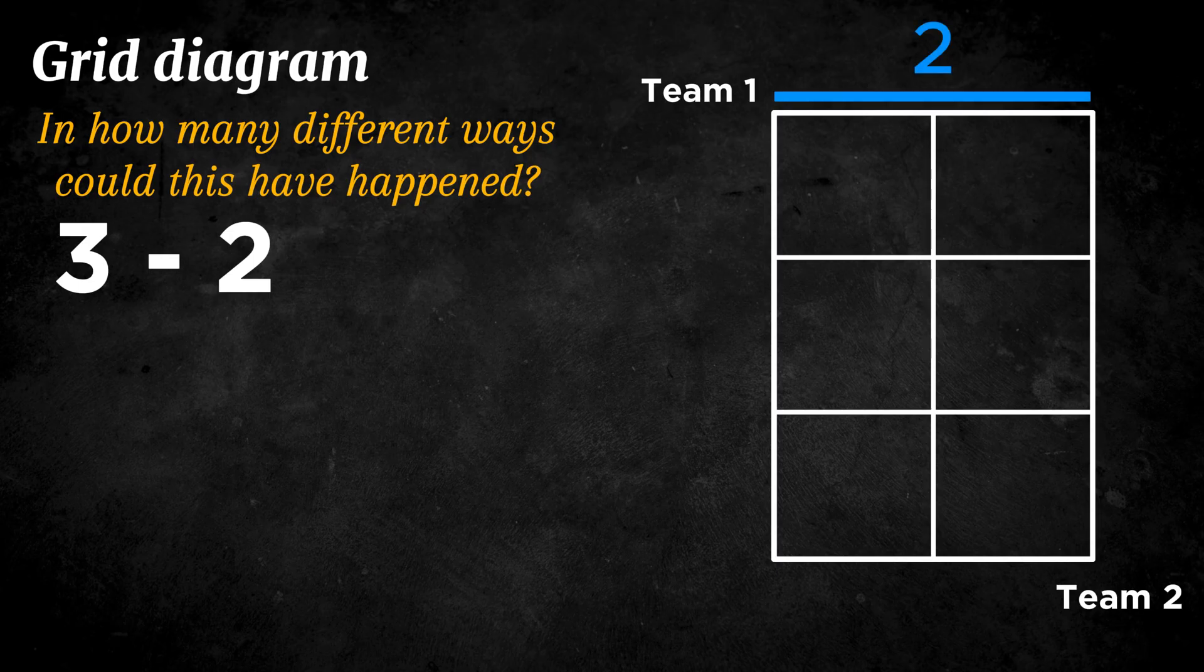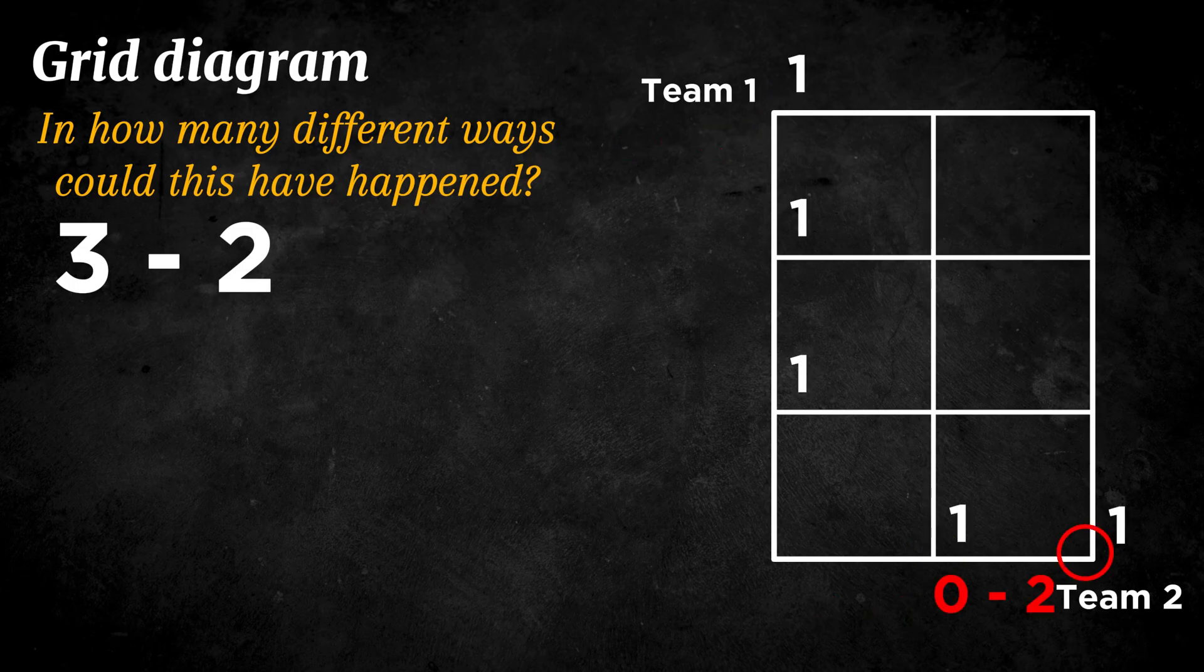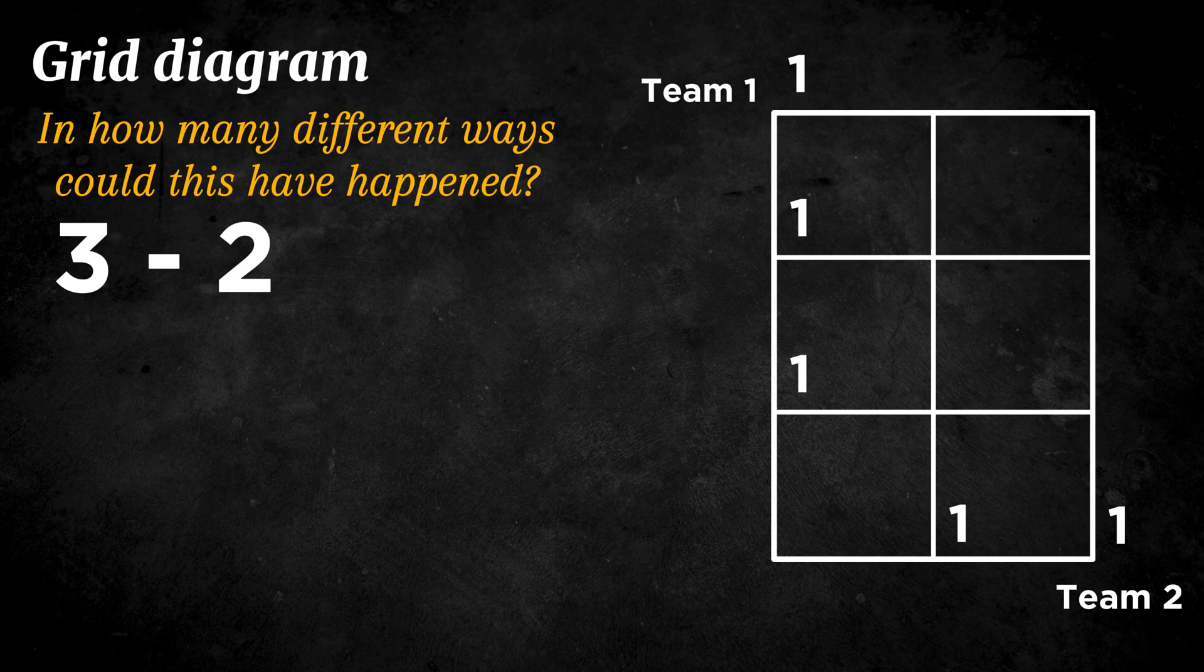Next, we fill in the grid with numbers that show how many possible ways there are to reach each score. For example, if the score is 1-0, that can only happen in one way. The same is true for 2-0, 3-0, 0-1, and 0-2. Each of those can also happen in only one way.